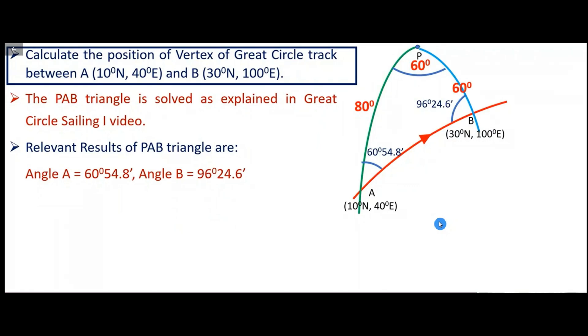Let me tell you how the vertex will become inside or outside. It will become outside. It will become outside because 96 degrees — angle B — will place the vertex outside the track, on the B side.